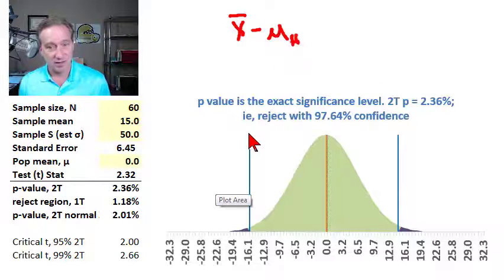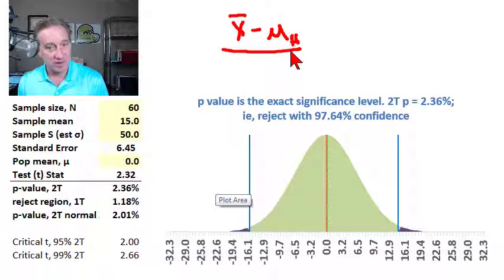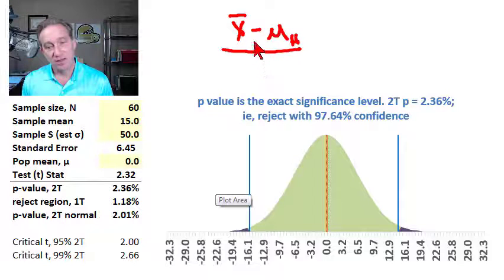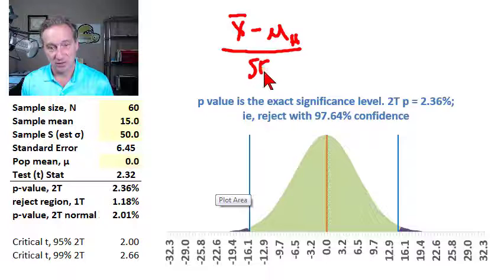I'll put a little h there, and then that's the numerator, and that's just the distance or difference between what we observe and what we're hypothesizing for the null. But it's in raw units. So we standardize this by dividing by the standard deviation, which is the standard error.